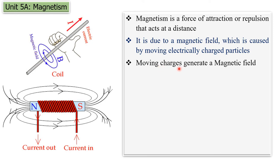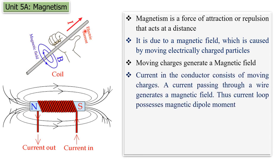For example, when we pass electric current through a conductor, we know that a magnetic field is developed around it. We can take the example of an electromagnet — this is an iron core. Wire is wound around it. When we pass current through this wire, the iron core gets magnetized and a magnetic field is developed around it.